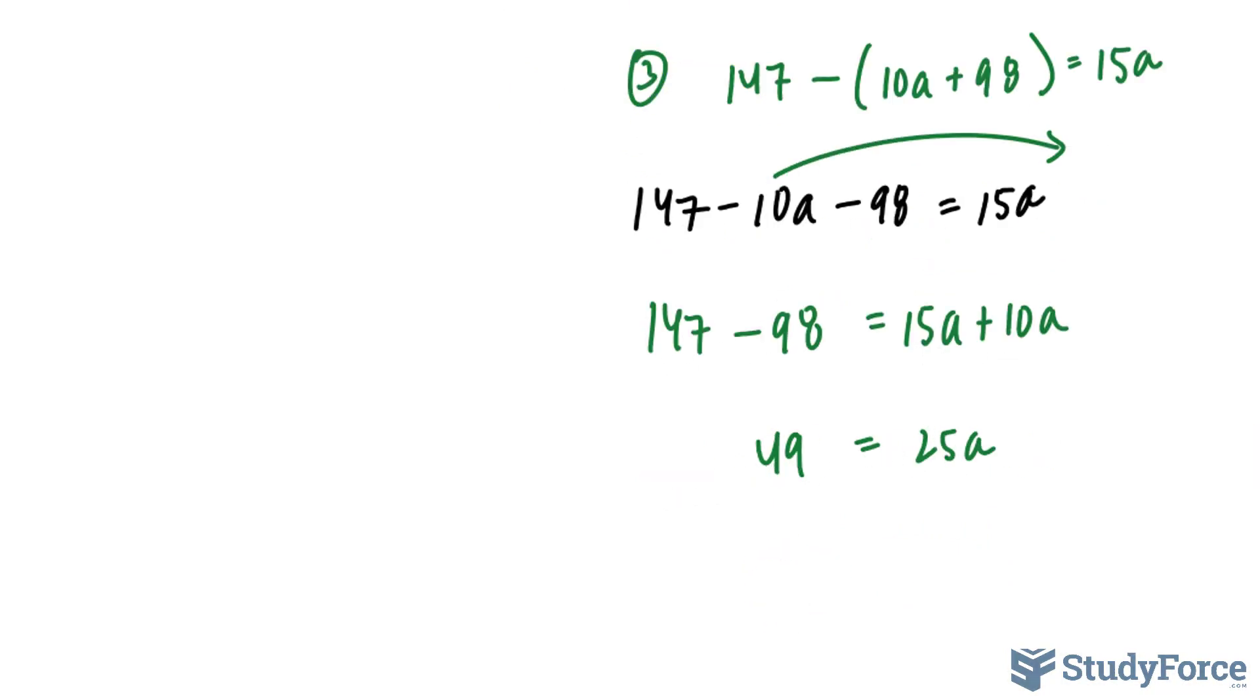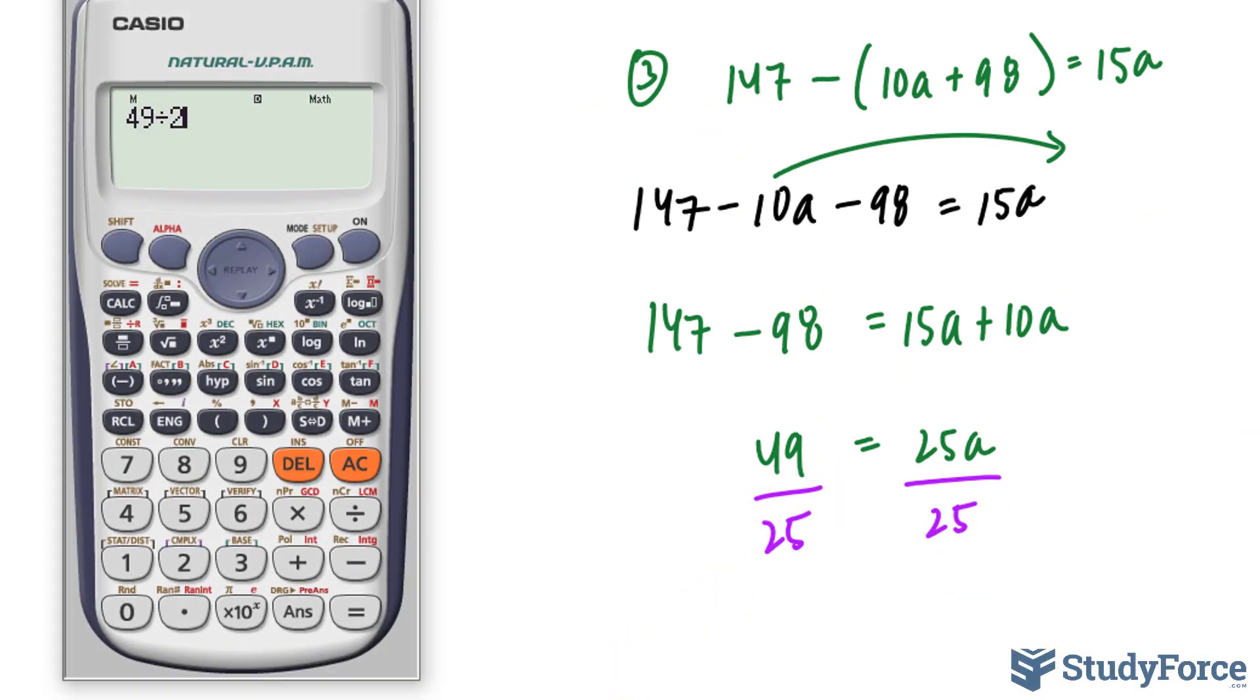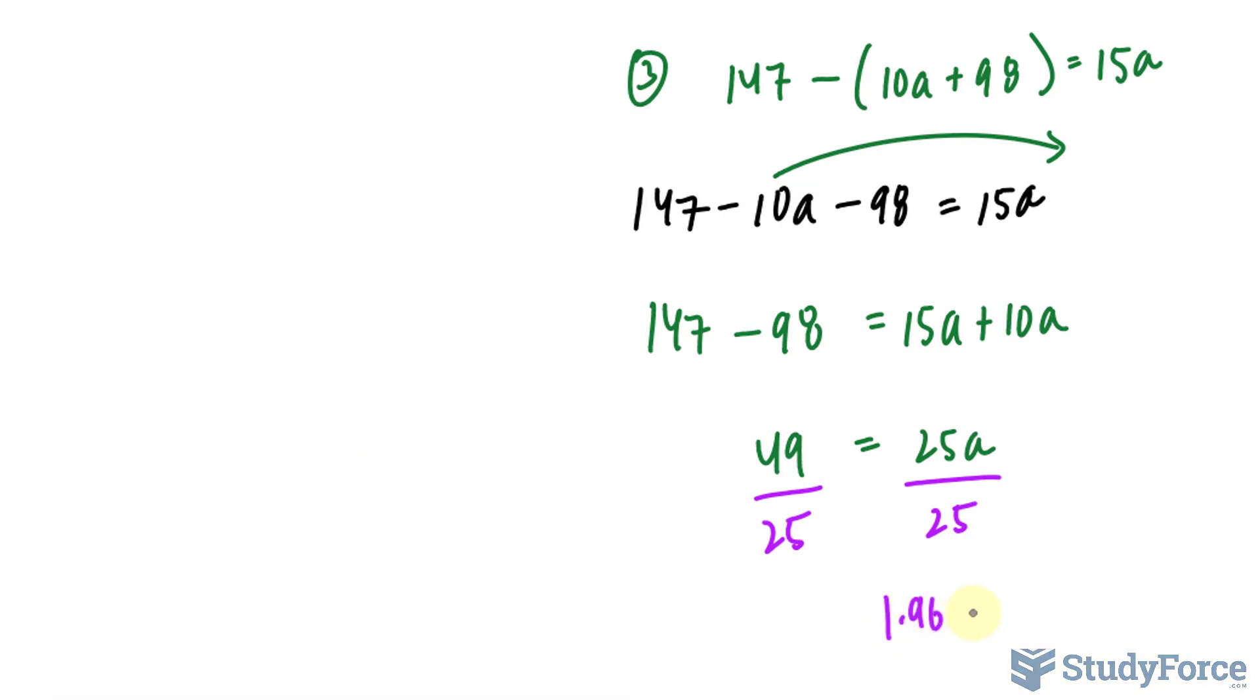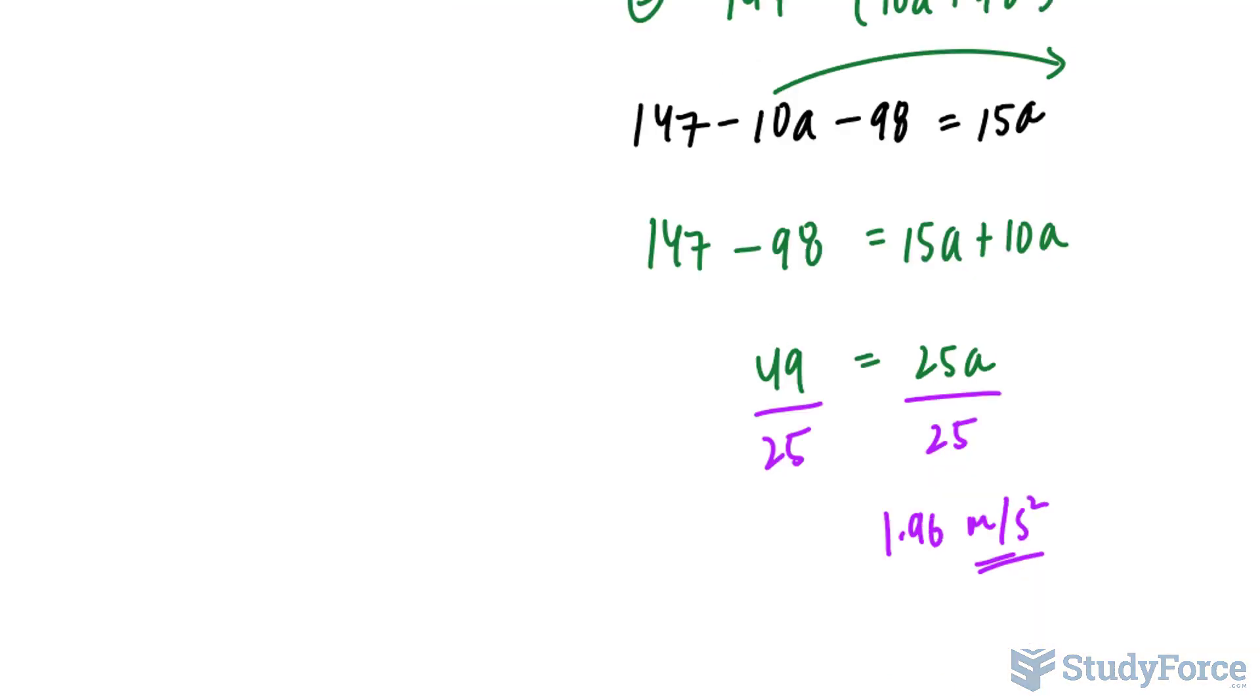And then we divide both sides by 25, and this should give us the acceleration of the system. So 49 divided by 25 makes 1.96 meters per second squared. Those are the units for acceleration. So the acceleration is approximately 2 meters per second squared.